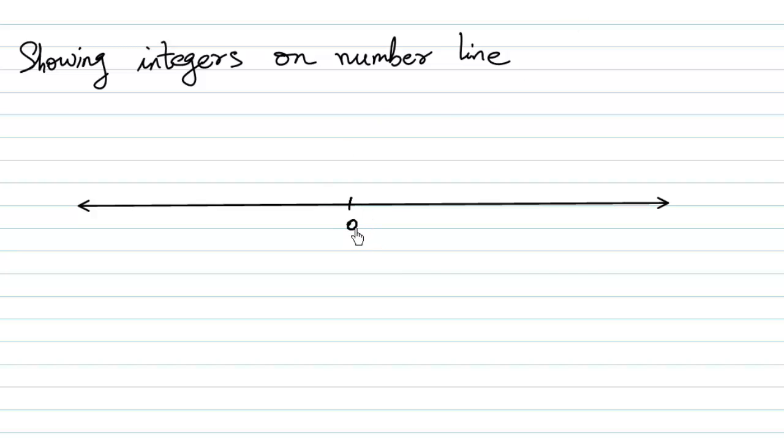0 somewhere in the middle. This 0 is said to be the origin, and then we write all the natural numbers on the right-hand side.